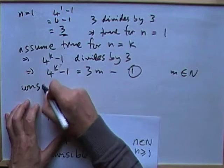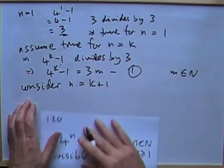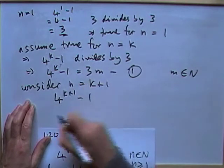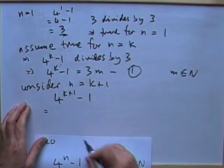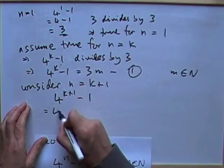Then consider the next one. Consider n equals k plus 1. So what of that? 4 to the k plus 1 minus 1. Well, the first obvious thing is I need to call this into play. I'll have to get a k.